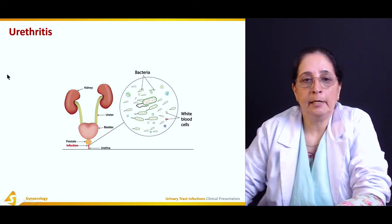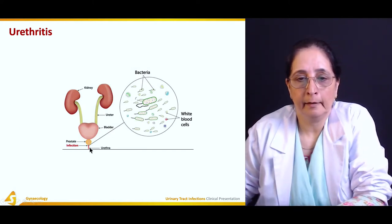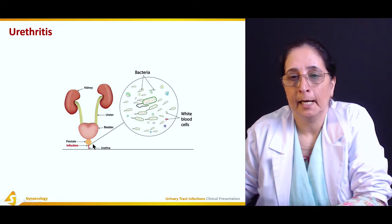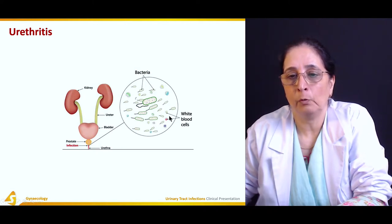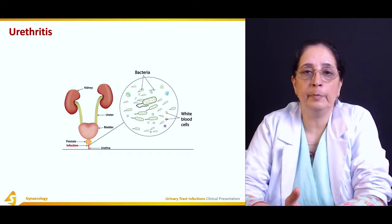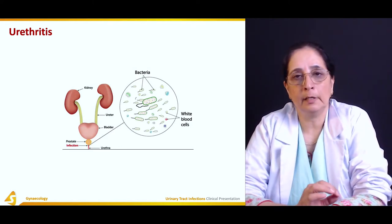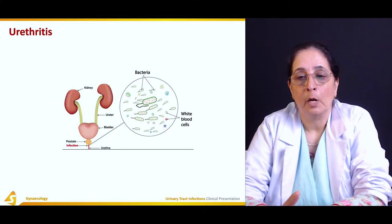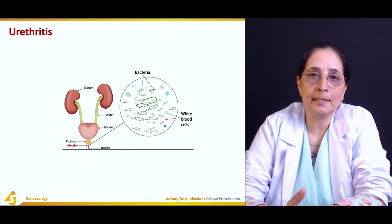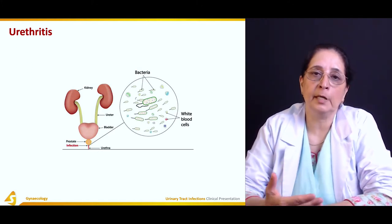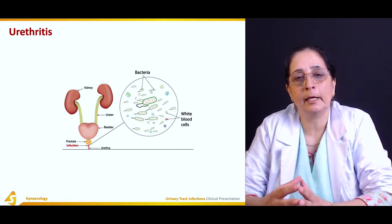Urethritis is the inflammation of the urethra. The diagram shows the different bacteria that lead to infection and also the white blood cell count. In UTI, as in any other infection, white blood cell count is high. On urinalysis done with the dipstick method, this gives an elevated white blood cell count. White blood cells are the cells that protect against infections; when there is infection, the white blood cell count increases to fight against it.